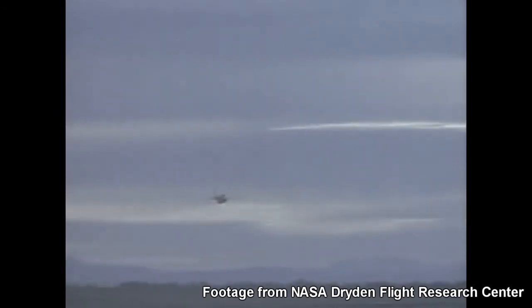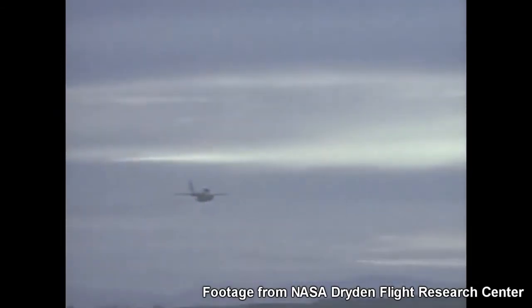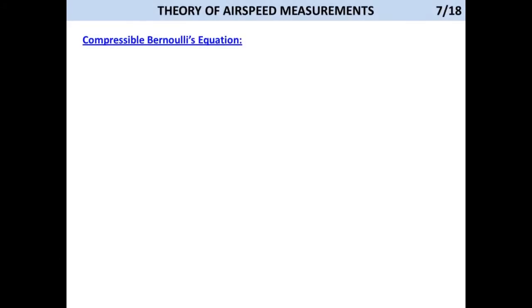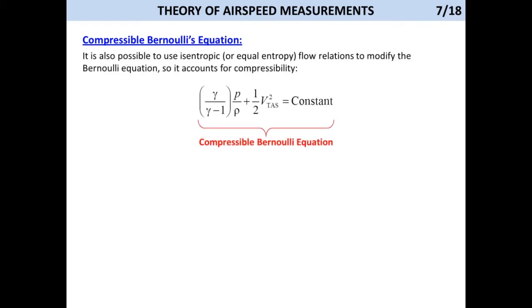By the 1930s, some airplanes were already flying fast enough to encounter a noticeable error in airspeed measurement. These problems were generally recognized as compressibility errors.